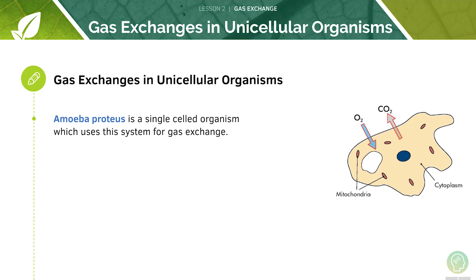Amoeba proteus is a single-celled organism which uses this system for gas exchange. Try to remember this organism in case you're asked to provide an example of a unicellular organism which uses its cell membrane to carry out gas exchange.